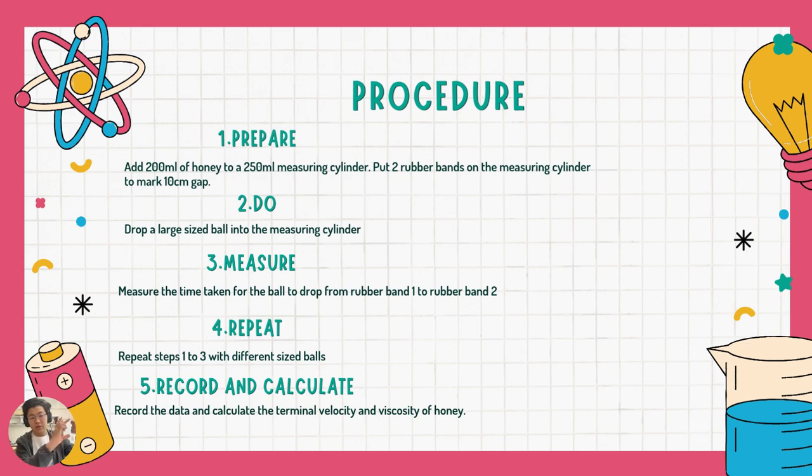We're going to use that to calculate the velocity later. The second step is you drop a large-sized ball into the measuring cylinder, and you measure the time taken for the ball to go from one rubber band to another rubber band, which is 10 cm. Repeat the experiment with different sized balls, and after that, we can record the data and calculate the terminal velocity and viscosity of honey.